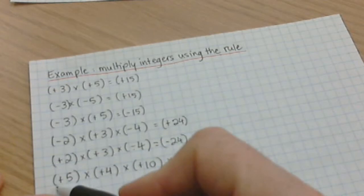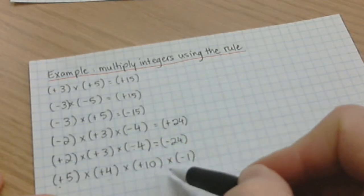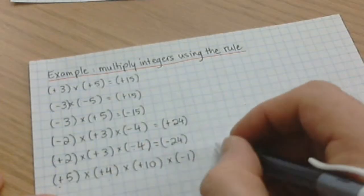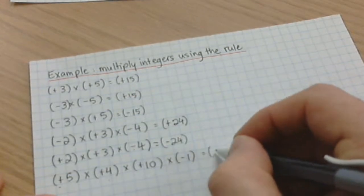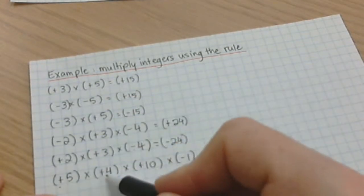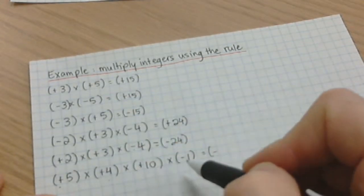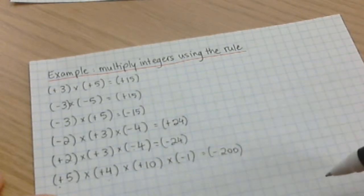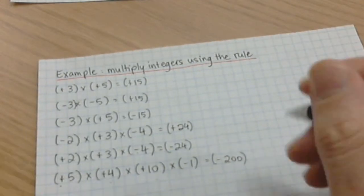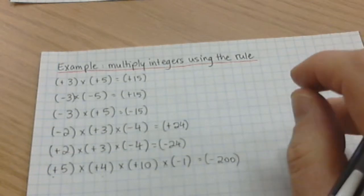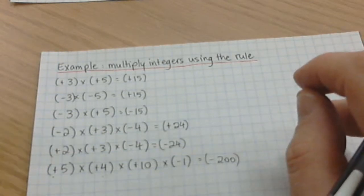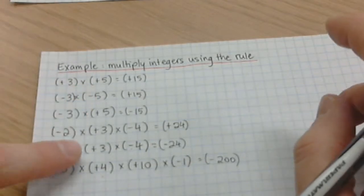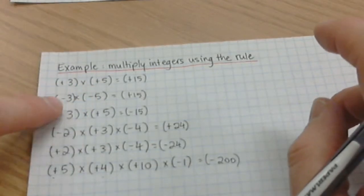And here I have positive five times positive four times positive ten times negative one. I have an odd number of negative signs, which means my answer's negative. Five times four is 20, times ten is 200, times one is 200. So the answer's negative 200. Even number of negative signs, answer's positive. Odd number of negative signs, answer's negative.